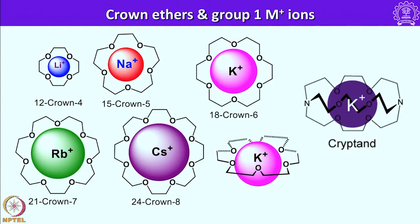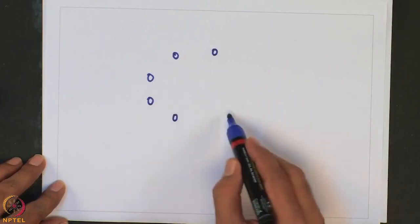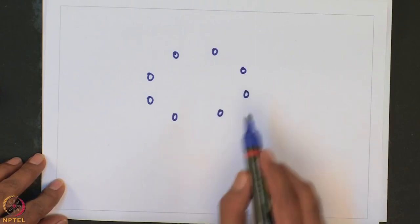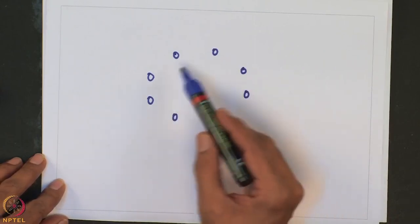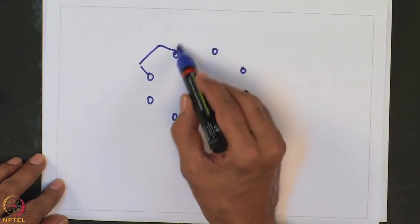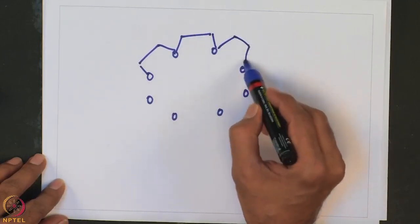Now let me explain the naming of these crown ethers — why we call them 18-crown or 15-crown. Let me write out one crown ether: we have some oxygen atoms connected through ethylene linkers.